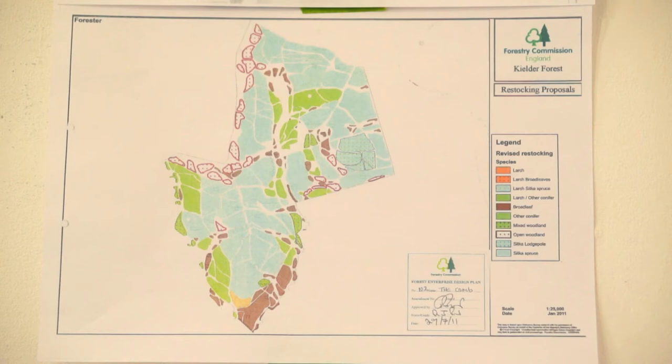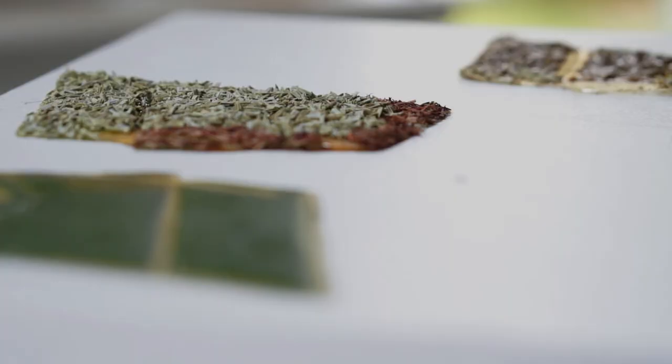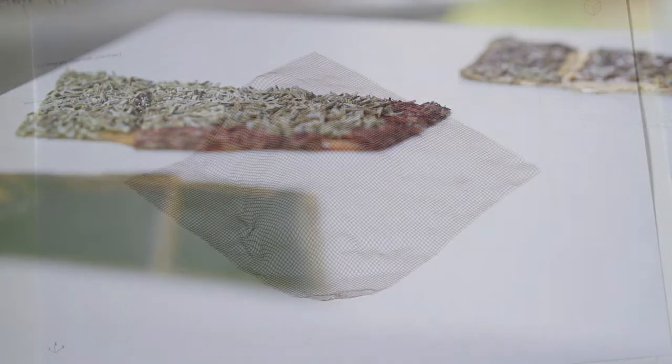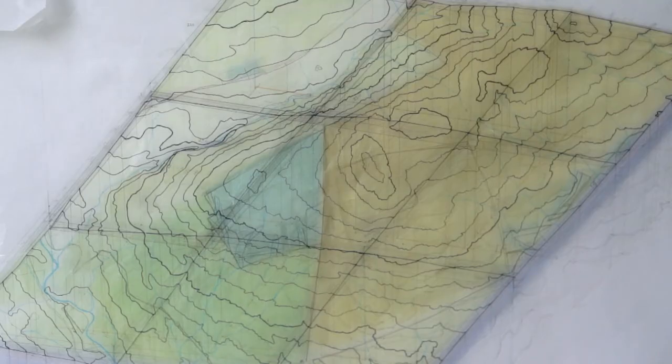The landscape around the area of Tarset and the North Tyne more generally is very managed by humans and very created and designed. It's been used by humans for hundreds and hundreds of years.